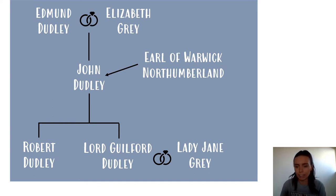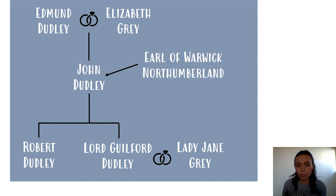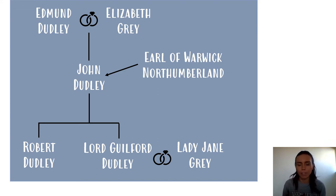John Dudley is in the middle of this family tree. He is referred to on our course most commonly as Northumberland, but prior to that title he was the Earl of Warwick. So keep in mind, especially when it comes to Tudor extracts, that John Dudley, Earl of Warwick, and Northumberland are likely referring to the same person if it is an Edward extract. In terms of John Dudley's parents, Edmund Dudley is an individual you would be expected to know — he is the Dudley of Empson and Dudley, seen under Henry VII in control of the council learned in the law. So Northumberland comes from a family who have had high positions in government already.